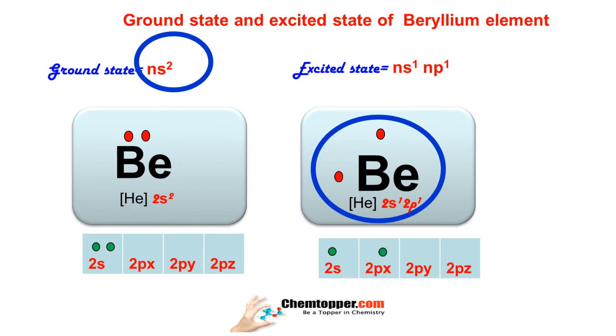So all group 2 elements in their excited state have two unpaired electrons in their Lewis dot representation.